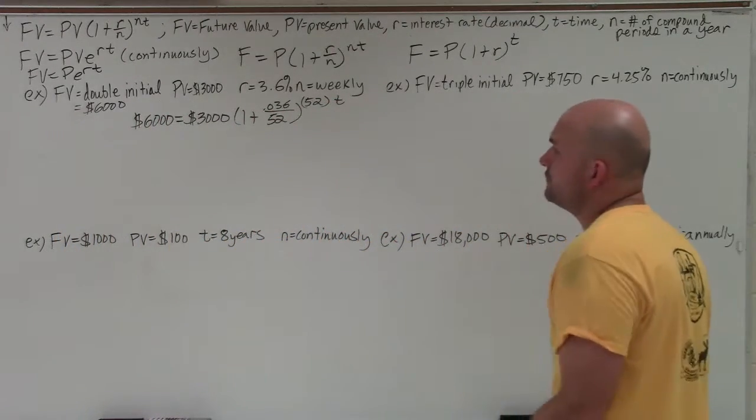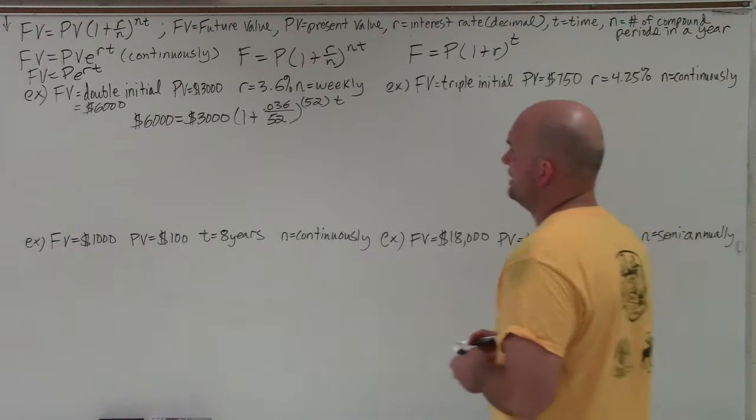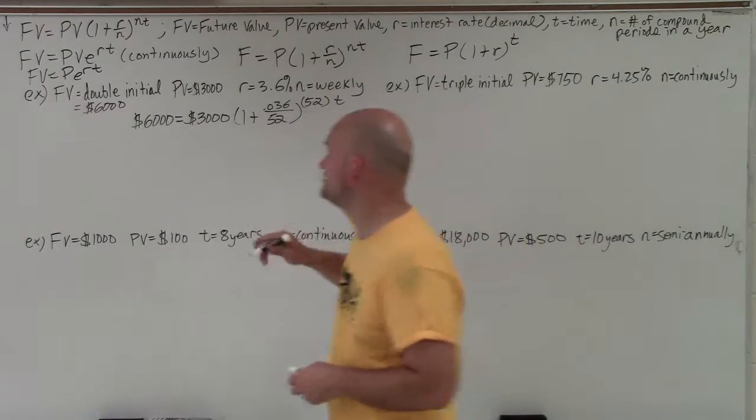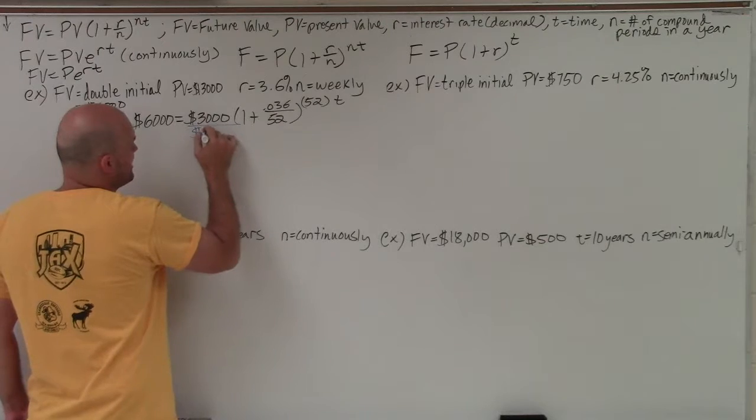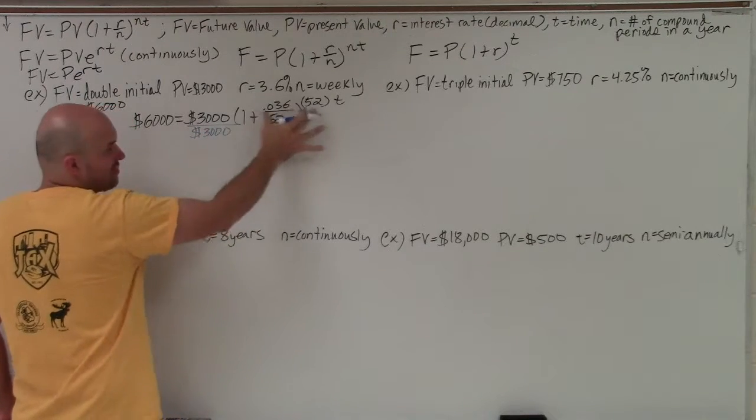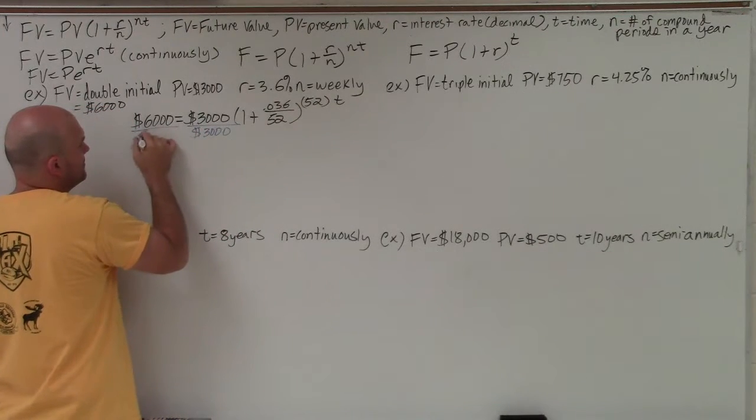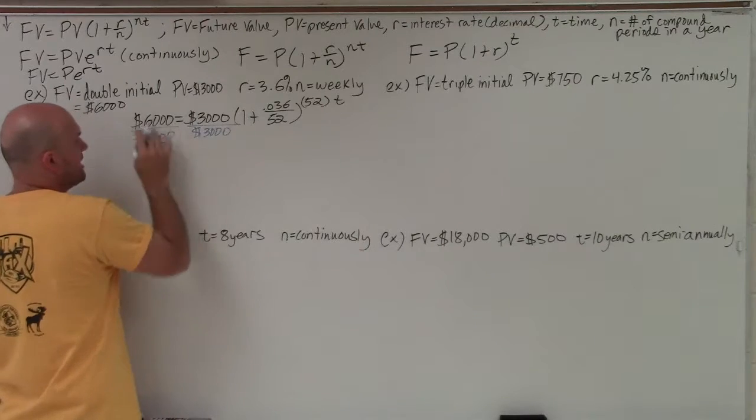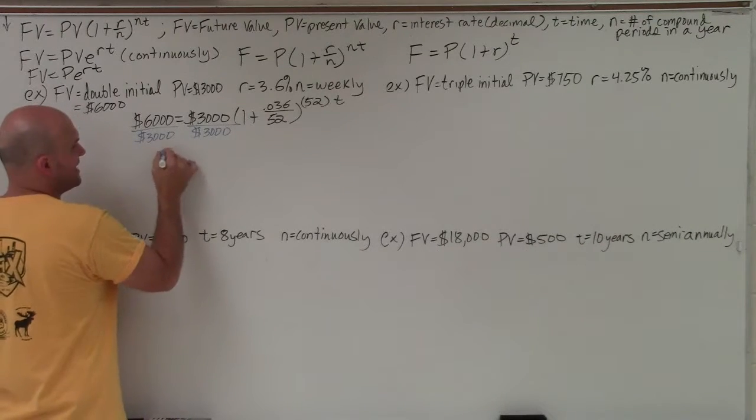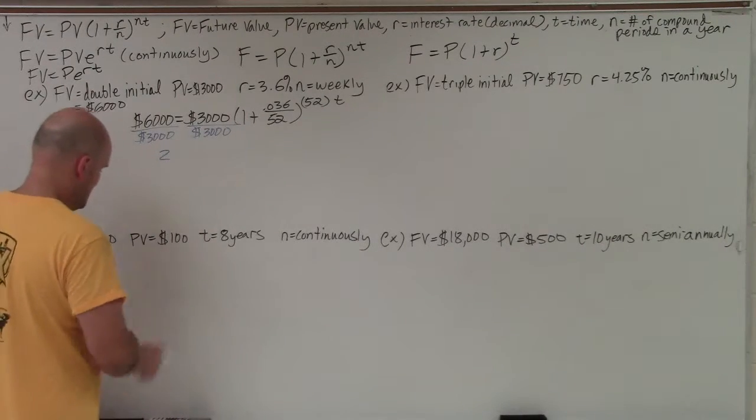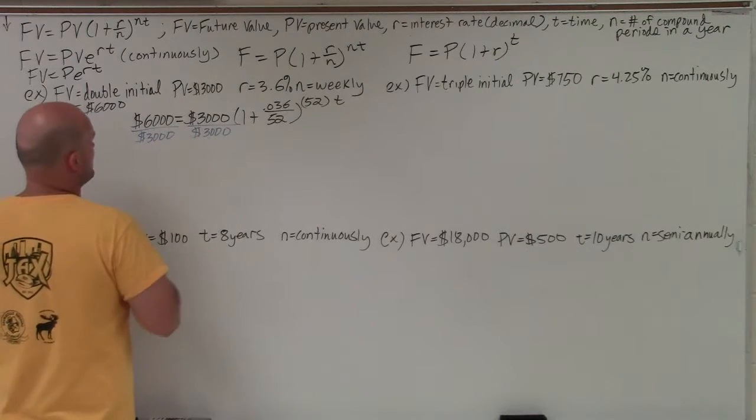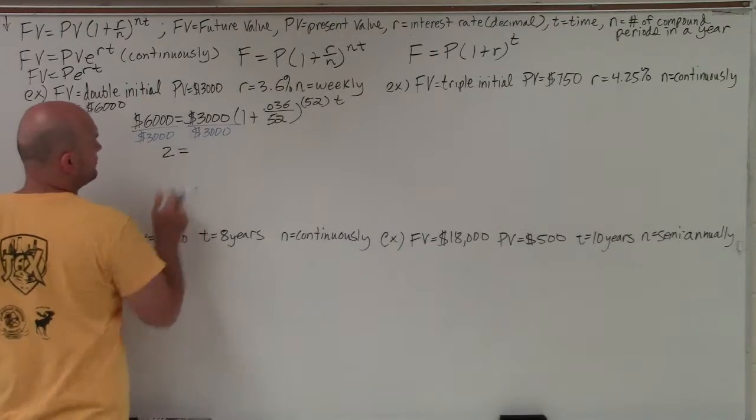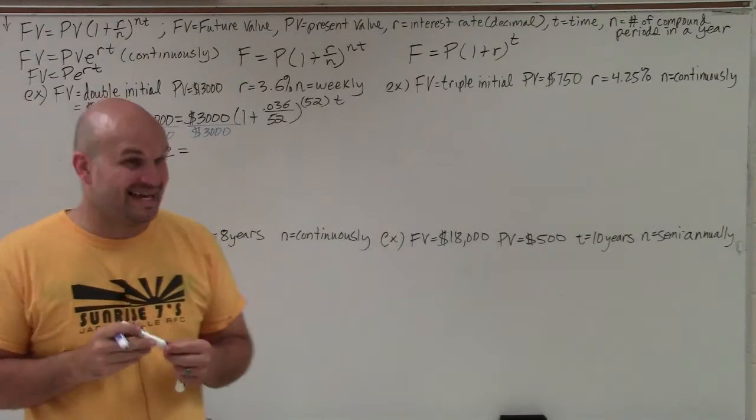OK, so the first thing that we're going to want to do is I can go ahead and divide out this 3,000. So I can divide by 3,000 on both sides, because that's just multiplying by that exponent. And when I do 6,000 divided by 3,000, I get the number 2. So that's 2 is equal to. Now I'm probably going to want to simplify this.